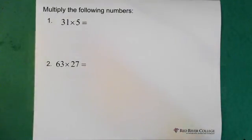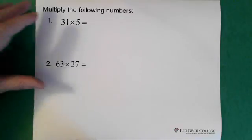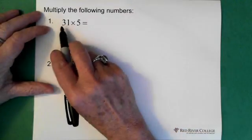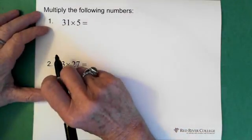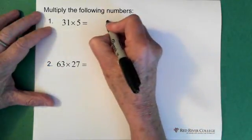So multiplication of numbers. Right now what I'm dealing with is whole numbers. There will be a video eventually on decimal numbers as well. So here we have 31 times 5. What you do here is you set it up like this.